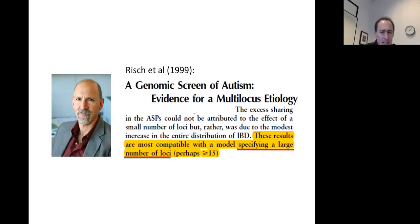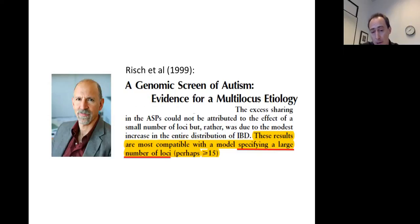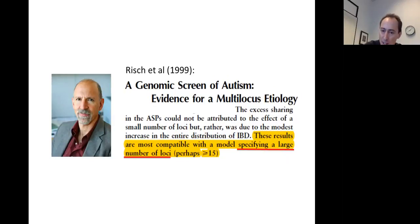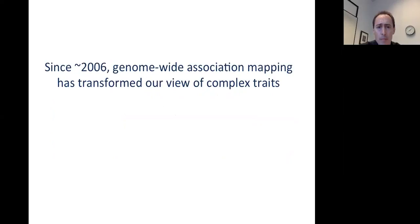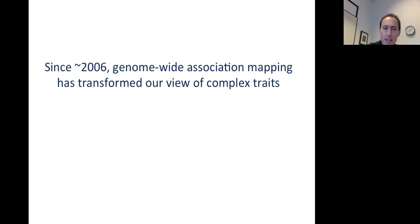This really highlights that up until the beginning of GWAS, people thought that even complex traits would be driven by relatively small numbers of loci. Presumably implicit in this is that these genes would have sort of really direct and understandable links to the disease you're studying. In the last dozen years or so, genome-wide association mapping has really transformed our view of complex traits and their genetics, and I think this has really been revolutionary.